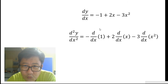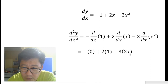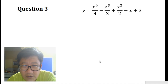Now we go on to d squared y dx squared. Again, we differentiate each of the terms independently. When we differentiate 1, we get 0. When we differentiate x, we get 1. When we differentiate x squared, we get 2x. The constants minus 1, plus 2, and minus 3 are retained. Tidying this up, we get 2 minus 6x. So d squared y dx squared equals 2 minus 6x.